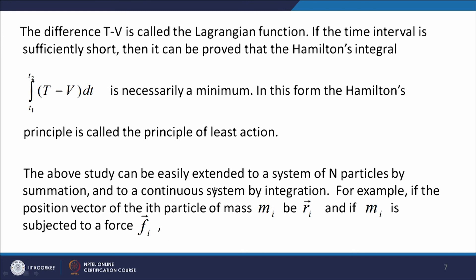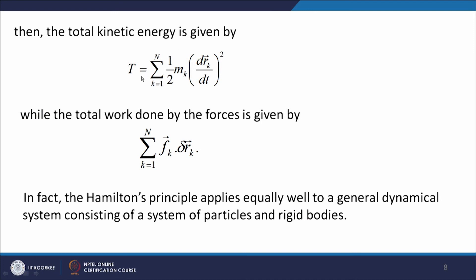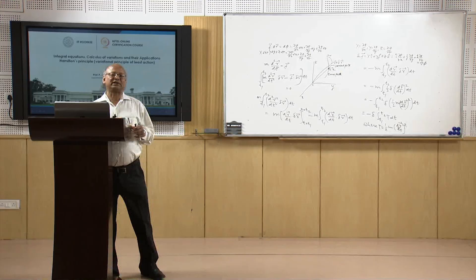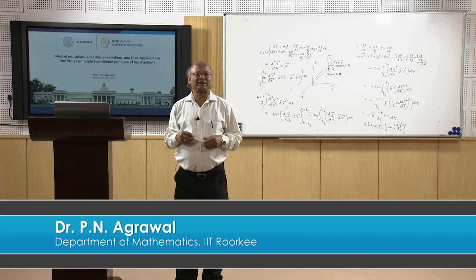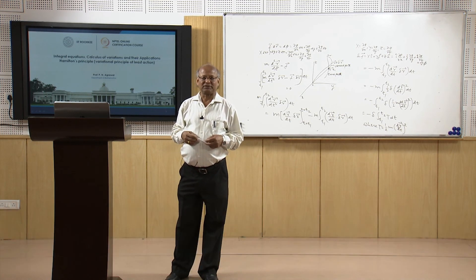This study can be extended to a system of n particles. For a discrete system we take summation, and for a continuous system we take integration. For example, if r_k is the position vector of the k-th particle of mass m_k subjected to force F_k, then the total kinetic energy is T = Σ(k=1 to n) ½ m_k (dr_k/dt)², while the total work done by the forces is Σ(k=1 to n) F_k · δr_k. Hamilton's principle applies equally well to a general dynamical system of particles and rigid bodies. This is one example of calculus of variations; in our next lecture we shall take up more examples. Thank you very much for your attention.